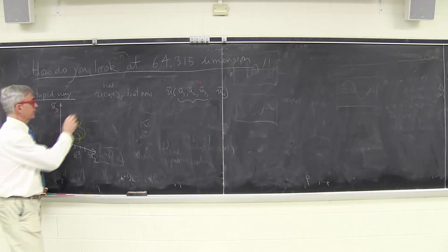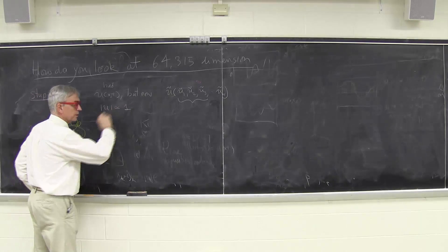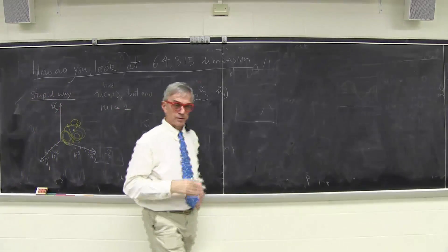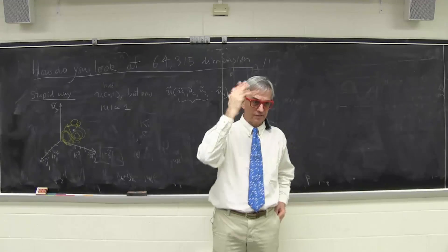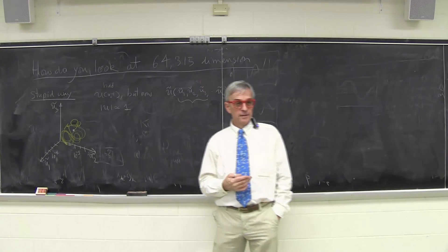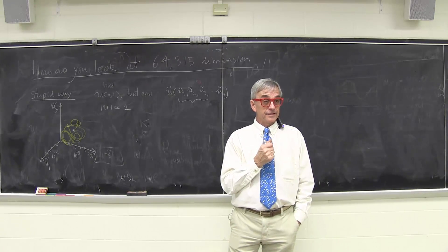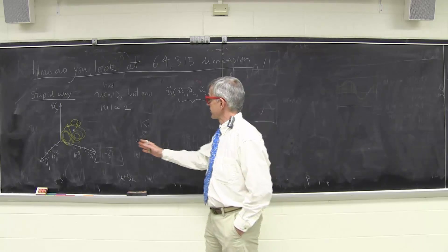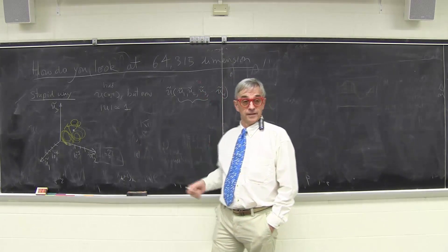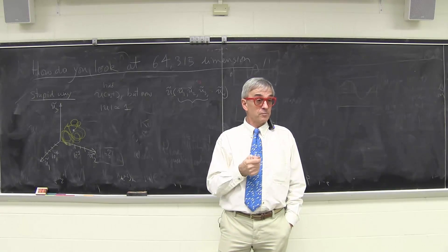This is very weird because in the original problem u was in some sense of order one, or I could rescale my problem. I could choose some scale in which u is of order one. But your visualization is picking out, out of the sum of 60,000 terms, it's picking out very, very small numbers.